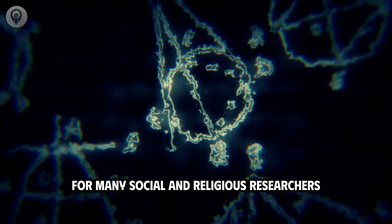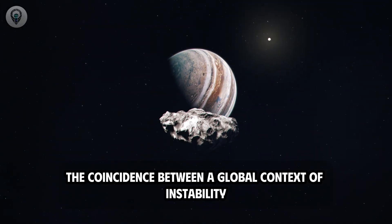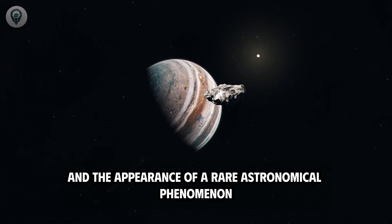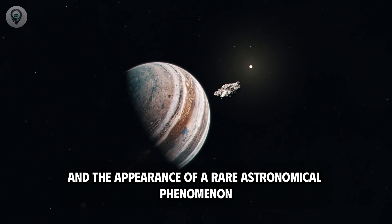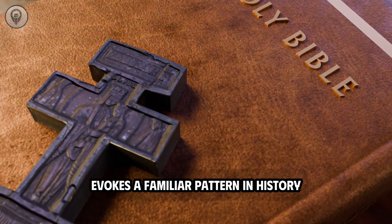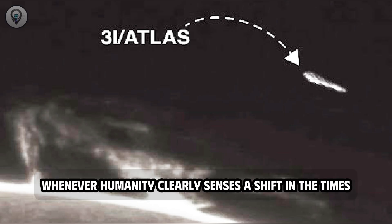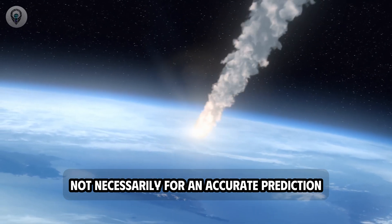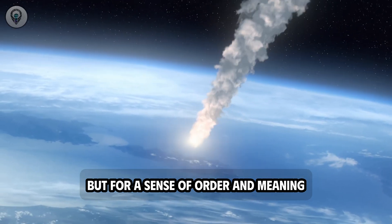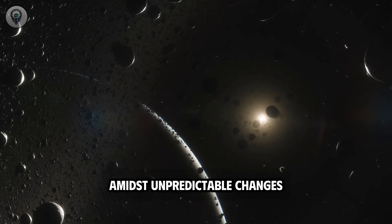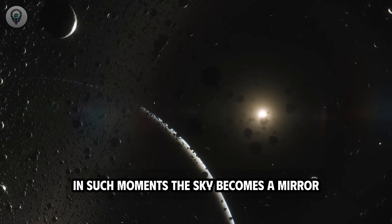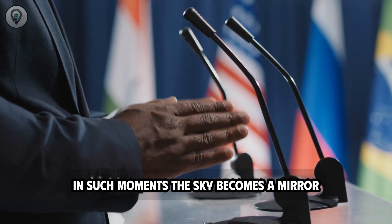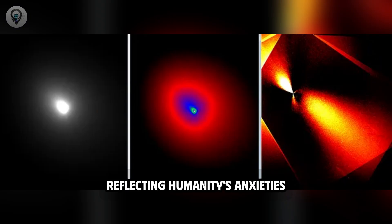For many social and religious researchers, the coincidence between a global context of instability and the appearance of a rare astronomical phenomenon like the 3i Atlas evokes a familiar pattern in history. Whenever humanity clearly senses a shift in the times, they turn their gaze to the sky, not necessarily for an accurate prediction, but for a sense of order and meaning amidst unpredictable changes. In such moments, the sky becomes a mirror reflecting humanity's anxieties, hopes, and profound questions.